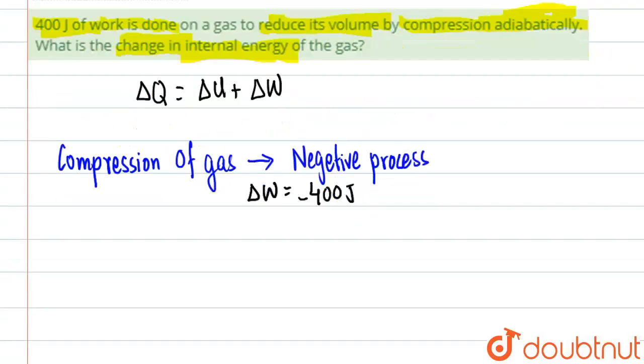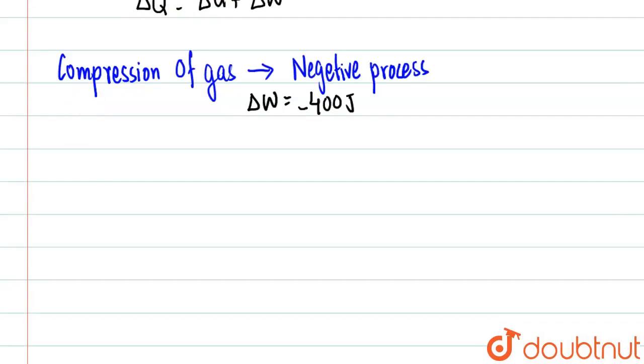So basically, we'll find the change in internal energy. We have this equation: ΔQ = ΔU + ΔW. Since it is an adiabatic process, ΔQ will be equal to 0.